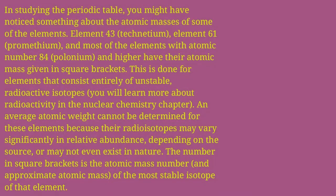You might have noticed something about the atomic masses of some elements. Element 43 (technetium) and element 61 (promethium), and most elements with atomic number 84 (polonium) and higher, have their atomic masses given in square brackets. This is done for elements that consist entirely of unstable radioactive isotopes. An average atomic weight cannot be determined for these elements because their radioisotopes may vary significantly in relative abundance depending on the source, or may not even exist in nature. The number in square brackets is the atomic mass number, an approximate atomic mass.